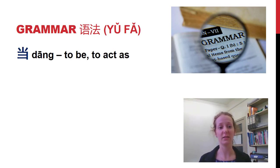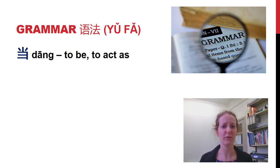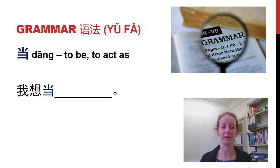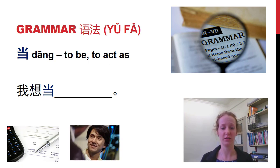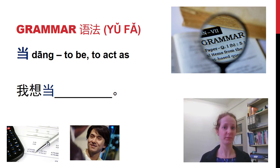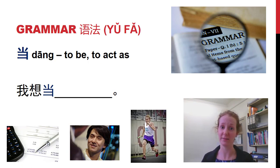下一个. 一个新词 — a new word. 当. This also means to be or to act as something, and we often use it when saying what we would like to do. So 我想当 means I would like to become or act as. 我想当. You make the sentence: I want to be an actor. 我想当演员. 下一个. An athlete — 运动员. 我想当运动员.